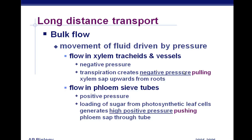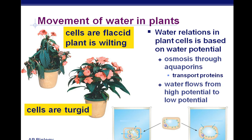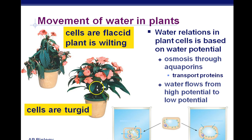Movement of water within plants is based on water potential. Water relations in plant cells involve osmosis through the aquaporins — water holes. Aquaporins are transport proteins that allow lots of water to move quickly. Water flows from where it's more pure, higher water potential, to where it's less pure, lower water potential — or from hypotonic to hypertonic. When plants are put in a hypotonic solution, they become turgid — stiff with internal pressure. If plants are put in a hypertonic solution, the water leaves the cells, the cells become flaccid, and the plant wilts. Flaccid means it lost water and there's no internal pressure.